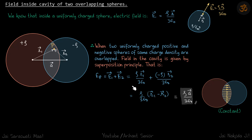From the diagram, r1 vector minus r2 vector is A vector, which gives our result rho a vector by three epsilon, which is a constant. It doesn't matter which point you take inside this cavity, everywhere the field is constant and its value is rho a by three epsilon.